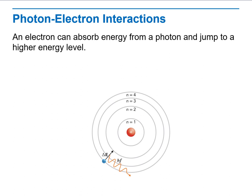What do you think happens when the electron jumps to a lower energy level? Energy is emitted as a photon. The reverse is also true: when electrons jump to a lower energy level, the energy is emitted as a photon.